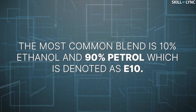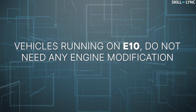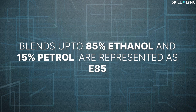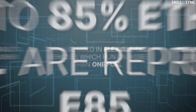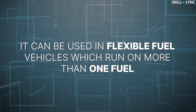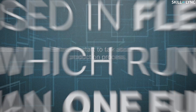The most common blend is 10% ethanol and 90% petrol, which is denoted as E10. Vehicles running on E10 do not need any engine modification. Blends up to 85% ethanol and 15% petrol, represented as E85, can be used in flexible fuel vehicles. These flexible fuel vehicles run on more than one fuel.